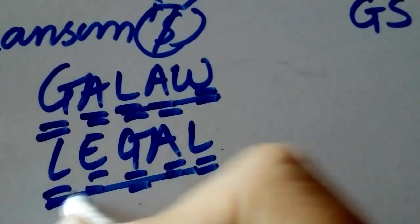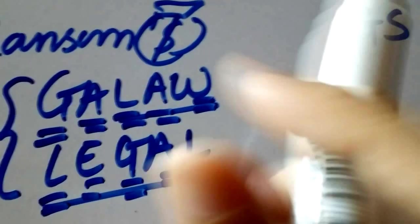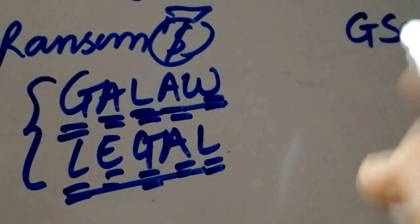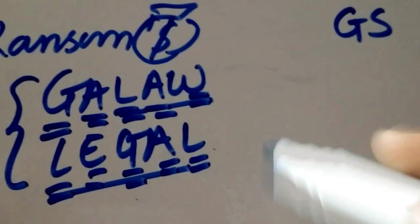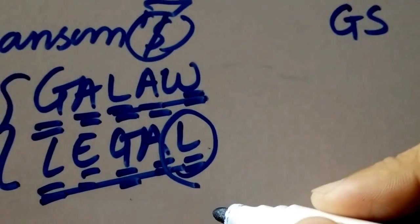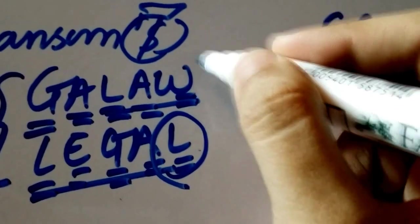And W stands for WBCs or leukocytes. And the reason I want you to remember both these words is because if you forget one thing from one word, the other word is there to compensate for it.